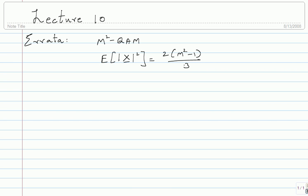Let me remind you of the signal space ideas and how you move from the real passband domain to the complex baseband domain. A general point in the M squared QAM constellation is denoted as a complex number a + jb — a two-dimensional space. There is a real passband signal corresponding to each signal point. I called it x_{ab}(t): the coefficient a multiplies a cosine term and b multiplies a sine term.